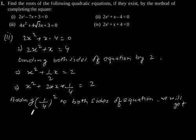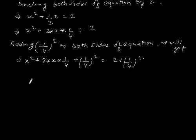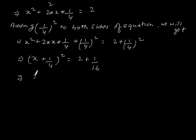Now, adding (1 by 4) squared to both sides of the equation, we get x squared plus 2 times x times 1 by 4 plus (1 by 4) squared is equal to 2 plus (1 by 4) squared. This gives x plus 1 by 4, whole squared, is equal to 2 plus 1 by 16, which implies x plus 1 by 4, whole squared, is equal to 33 by 16.